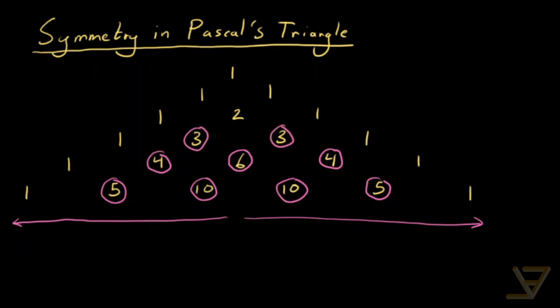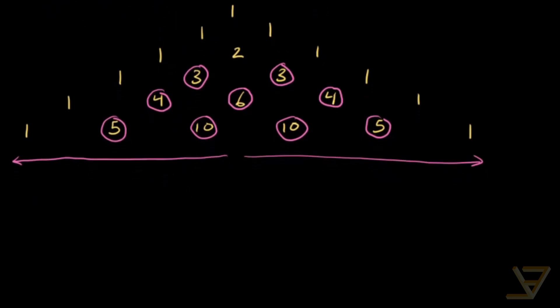So the question is, what does this mean in terms of algebra? Because we know that in the nth row, starting with row zero, the nth row kth entry from the left, where the leftmost entry is the zeroth entry, is equal to n choose k.